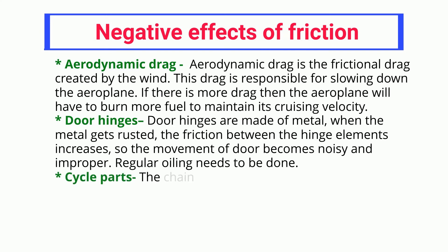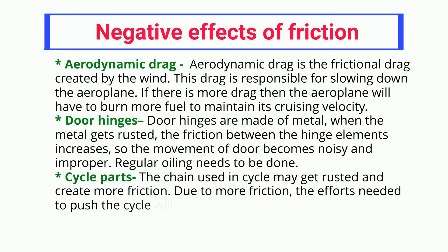Door hinges: Door hinges are made of metal. When the metal gets rusted, the friction between the hinge elements increases, so the movement of door becomes noisy and improper. Regular oiling needs to be done. Cycle parts: The chain used in cycle may get rusted and create more friction. Due to more friction, the efforts needed to push the cycle will be more, which will result in unnecessary exertion.